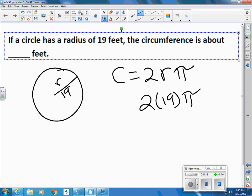So that is 38 pi, which is about 38 times 3. 38 times 3 would be 114.